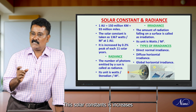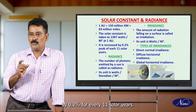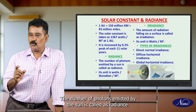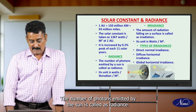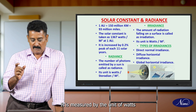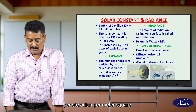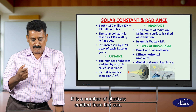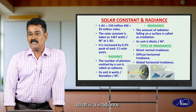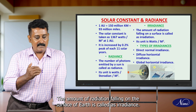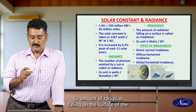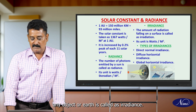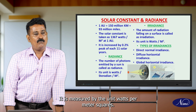The next term is radiance. The number of photons emitted by the sun is called radiance. It is measured in the unit of watts per radian per meter square. Next one is irradiance. The amount of radiation falling on the surface of the Earth is called irradiance. It is measured in the unit of watts per meter square.